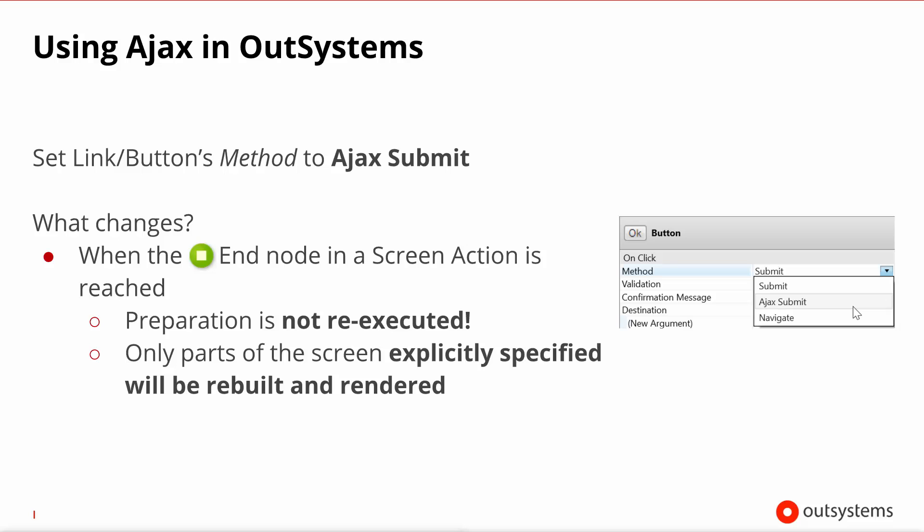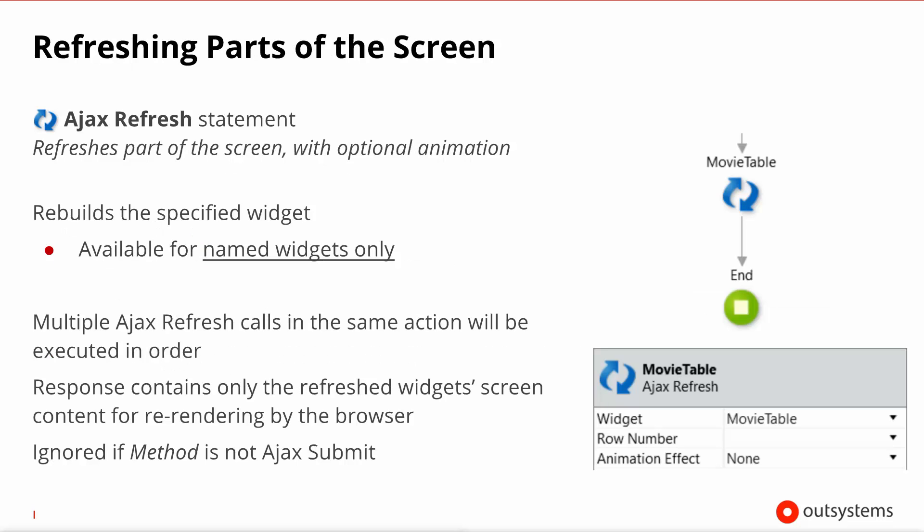This means that if your Ajax interaction with the screen only needs to update a small panel, say in the top right-hand corner, it can do so very quickly. So how do you signal the need for the refresh of a certain area, a certain panel on your screen? You use the Ajax refresh statement.